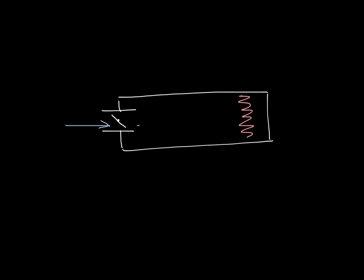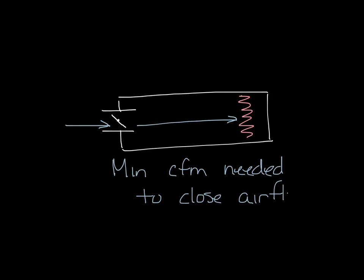And the damper is kind of at a minimum position because it's looking for the heating CFM. In a box with electric heat, you have to have enough airflow to close an airflow switch so that the heater will energize. So if you oversize the box and you can't get enough airflow to make the airflow switch, the heater won't energize.